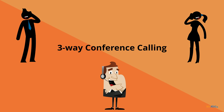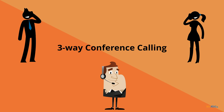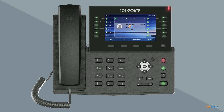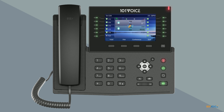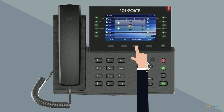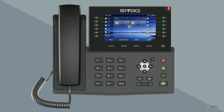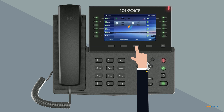Your IP982G phone supports three-way conference calling, allowing you to speak to two different parties in the same call. To start a three-way conference, while the first party is on the phone, press the conference soft key on the main display. Enter the number or extension for the second party and press the dial soft key. Then press the conference soft key again. To join the conference, use the arrow keys to select the caller on hold and press OK. When you're done, you can hang up or press the end soft key to end the call, or the split soft key to split the callers into two separate calls.